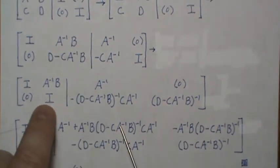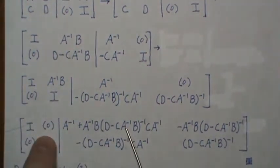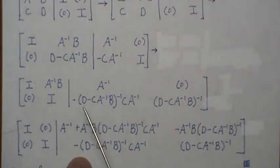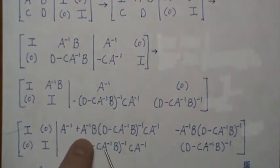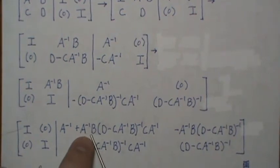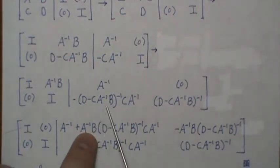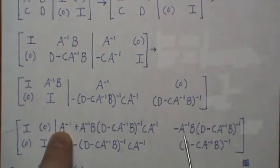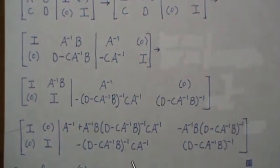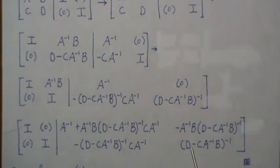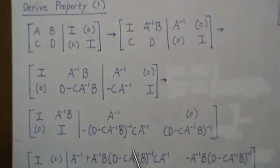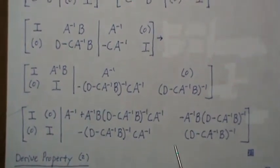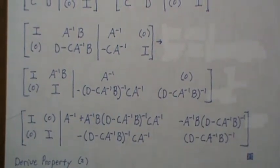That entry goes to zero. Notice: minus A-inverse B is this piece from earlier, and adding it gives the term out front; the minus A B piece is out there too. And that's the inverse matrix of [A B; C D] — exactly the result from page 1.